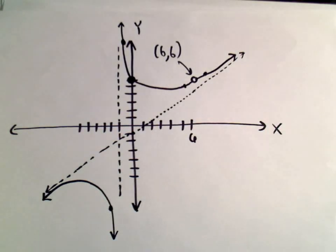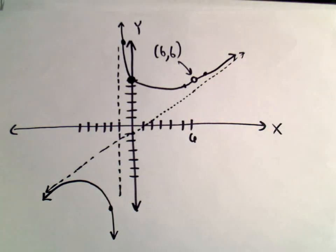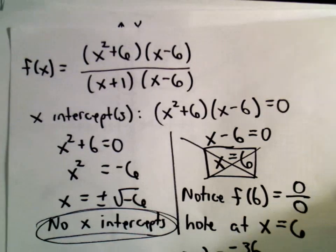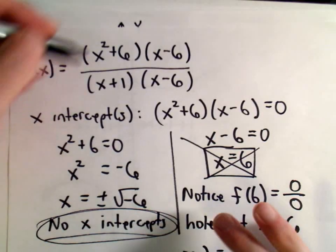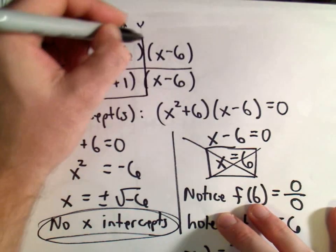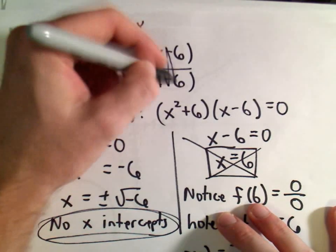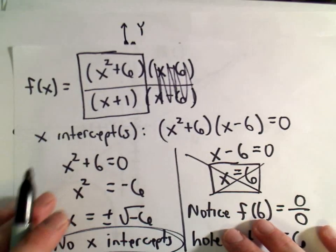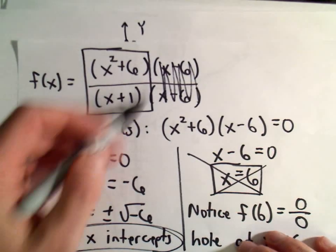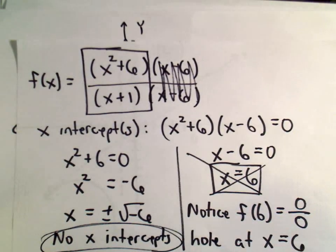One key thing is to factor first and then use the simplified form. We factored it and used x squared plus 6 over x plus 1 to do the long division and find the oblique asymptote, which makes the whole process a bit easier.